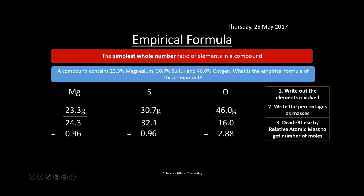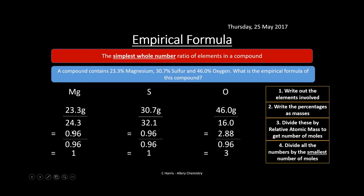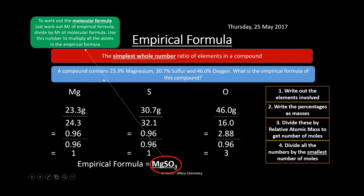Divide each mass by the relative atomic mass to get moles: Mg: 23.3 ÷ 24.3; S: 30.7 ÷ 32.1; O: 46.0 ÷ 16. This gives a ratio of approximately 0.96 : 0.96 : 2.88. Divide all by the smallest value (0.96) to get 1 : 1 : 3. The empirical formula is therefore MgSO₃.